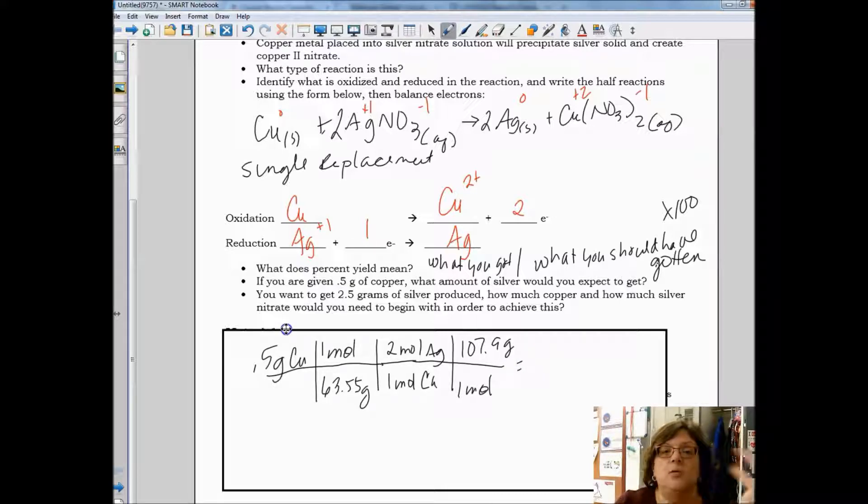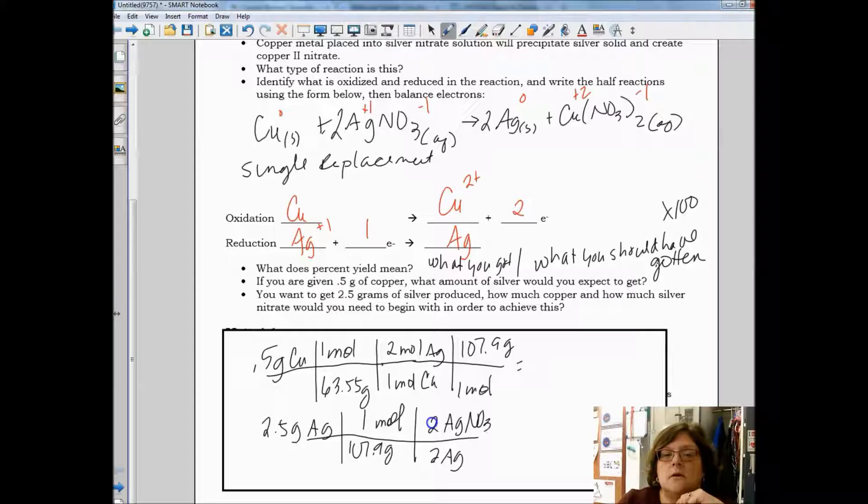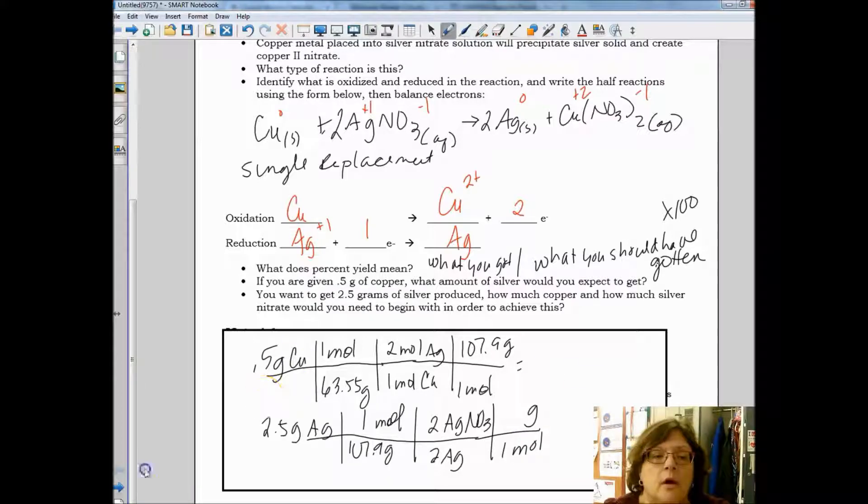So, the next question, if you want to get 2.5 grams of silver, how much copper, how much silver nitrate? You're going to solve, starting with 2.5 grams of silver. Our ratio of silver to silver nitrate. You can figure out the molar mass of silver nitrate, and then you'll do the same thing for copper. You'll solve, but instead of putting silver nitrate here, you would have one copper in the molar mass of copper. All right. Thank you.